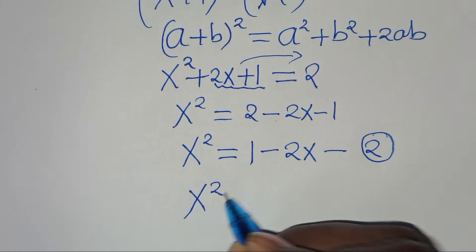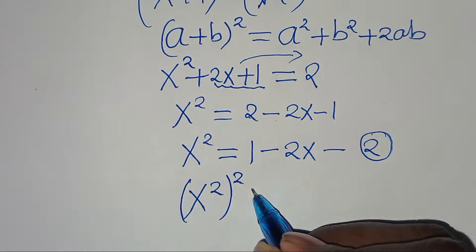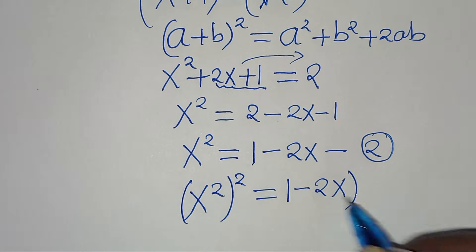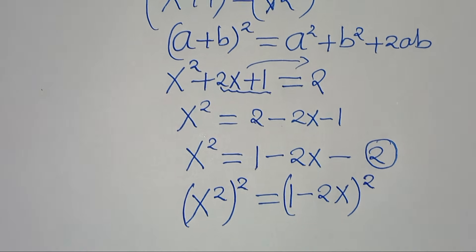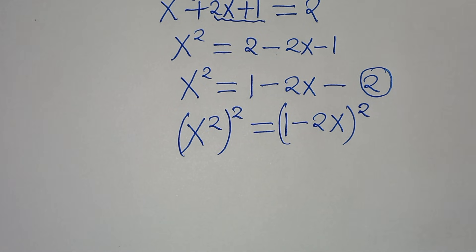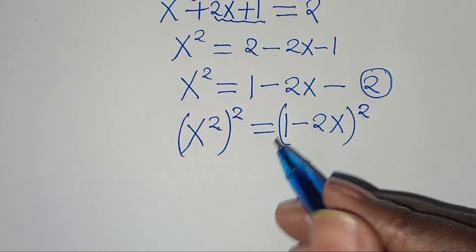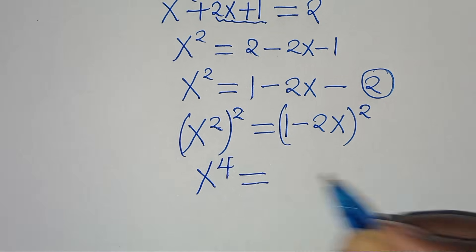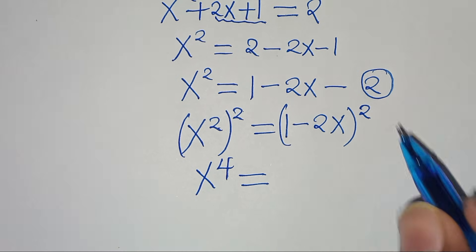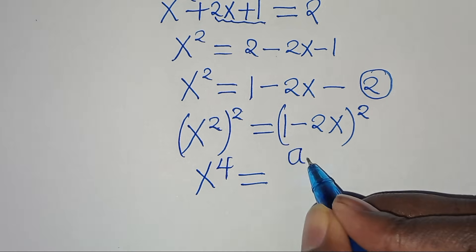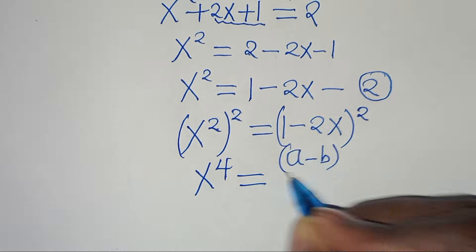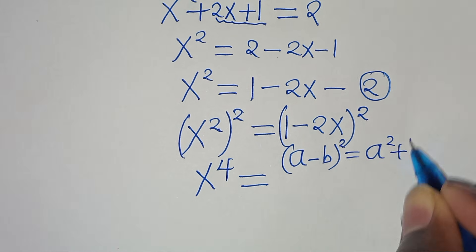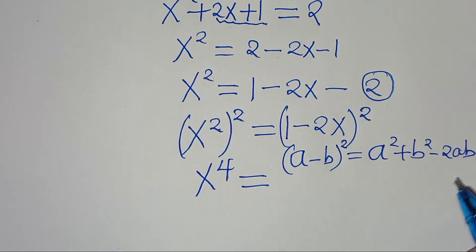We have x to the power of 2 — raise this to the power of 2. This is equal to 1 minus 2x raised to the power of 2. Here we have x to the power of 4. This is equal to 1 minus 2x to the power of 2, which is in the form of a minus b raised to the power of 2, expressible as a squared plus b squared minus 2ab.